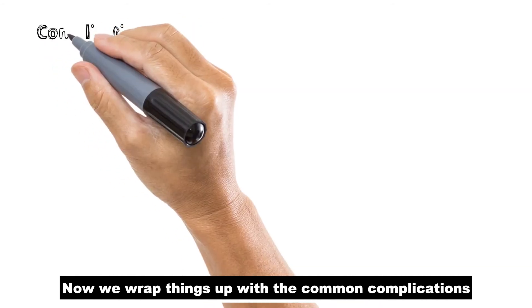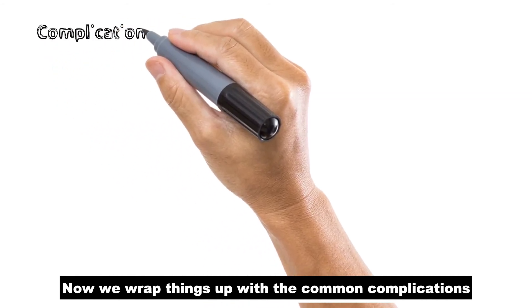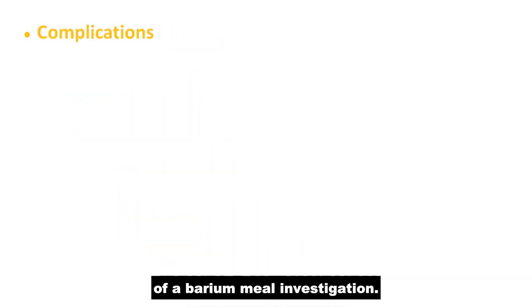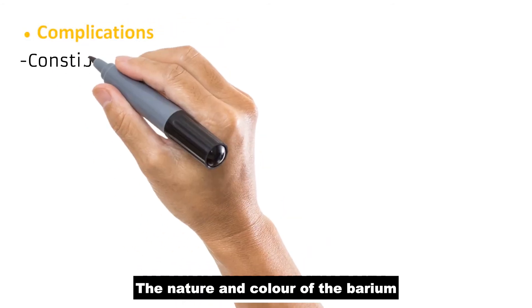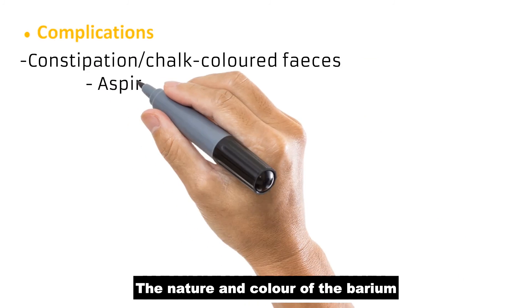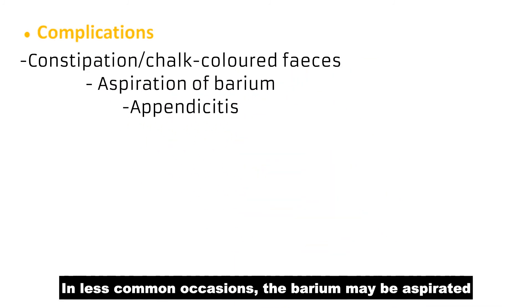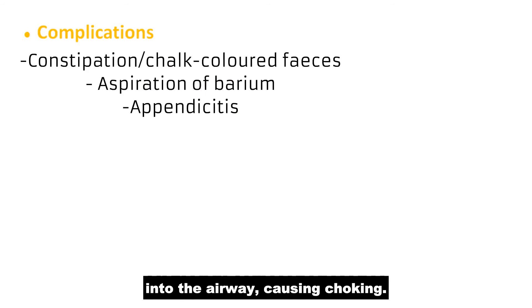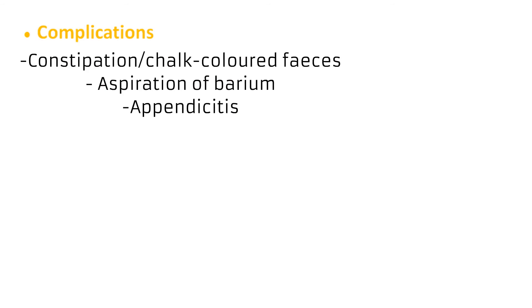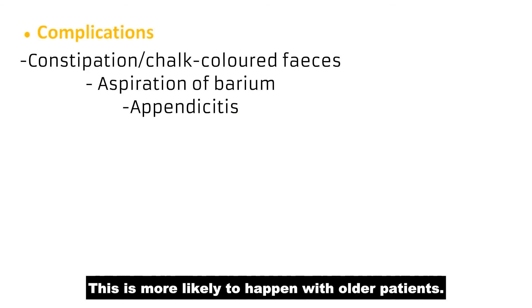Now we wrap things up with the common complications of the Barium Meal investigation. The nature and color of the Barium has a tendency to cause some constipation and chalk-colored feces. In less common occasions, the Barium may be aspirated into the airway, causing choking. This is more likely to happen with older patients.